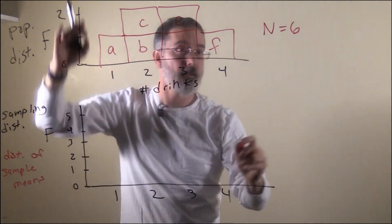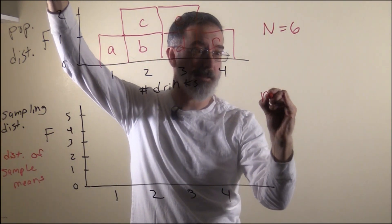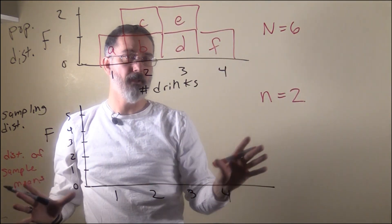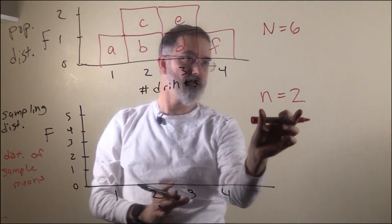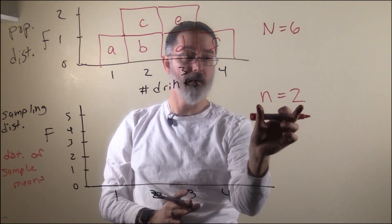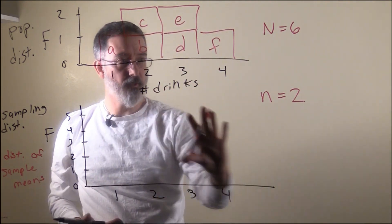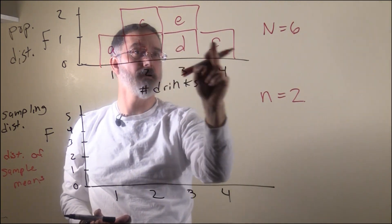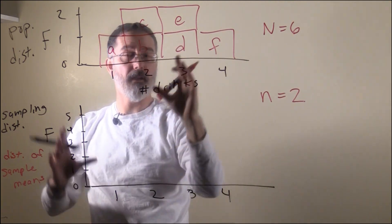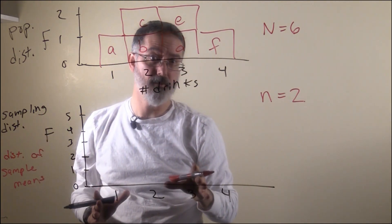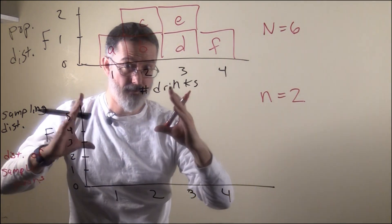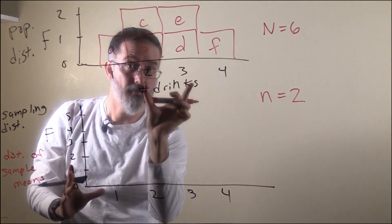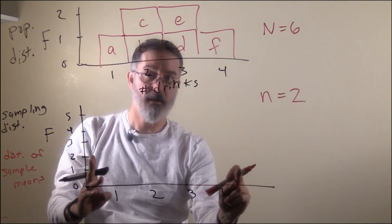To keep things simple, we are going to do sample sizes of two. If we are randomly sampling, then every possible combination of two is equally likely. To create this sampling distribution, we are going to do every possible combination of two, calculate the average of those two individuals — that is the average number of drinks between those two — and then plot those sample means down here.